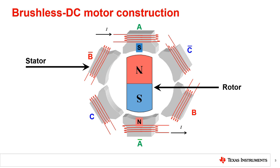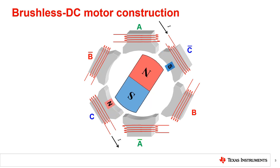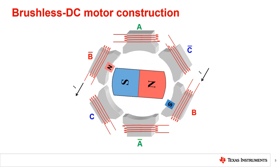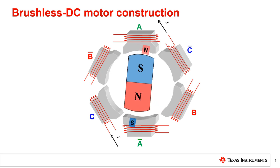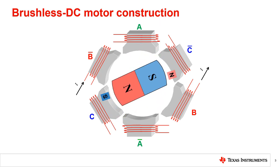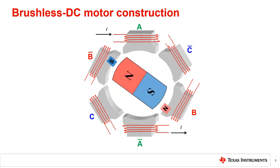Each phase of the stator has coil windings which act as electromagnets when injected with current. The rotor has permanent magnets and interacts with the magnetic fields produced by the stator, generating torque. This process of switching on and off the current to each phase winding is called motor commutation, and is what causes the motor to spin.